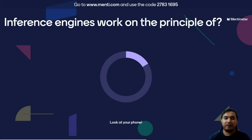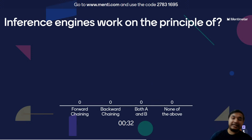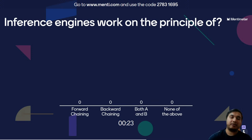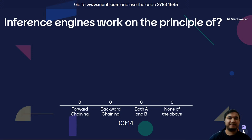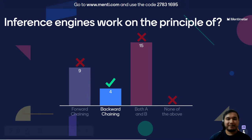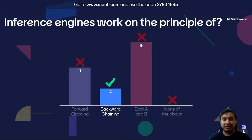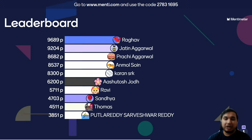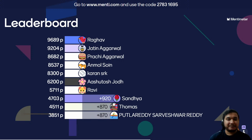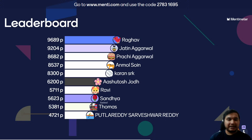Question number thirteen: Inference engines work on the principle of what? Option A, forward chaining? Option B, backward chaining? Option C, both forward and backward chaining? Or option D, none of the above? The correct answer is backward chaining. Forward chaining starts with atomic sentences in the knowledge base and applies inference rules in the forward direction. Backward chaining is a form of reasoning which starts with the goal and works backward accordingly.